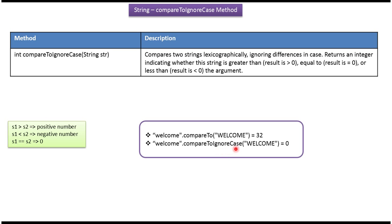Using compareToIgnoreCase method, I am comparing lowercase welcome string with the uppercase welcome string. It returns 0, meaning both the strings are equal. compareToIgnoreCase method ignores case sensitivity.